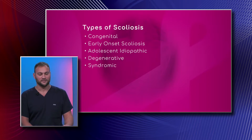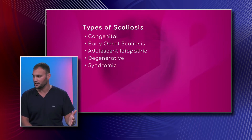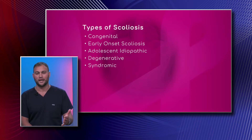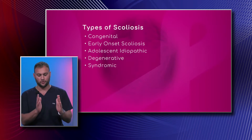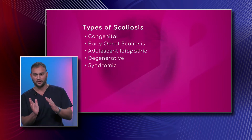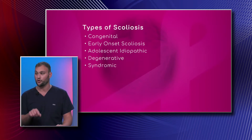Degenerative scoliosis is the type I see most often since I mostly see adults. This is what happens with asymmetrical disc degeneration, which results in the spine curving in the direction of the concavity. It is more age-related.